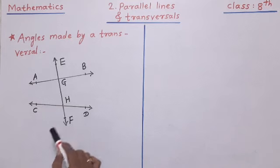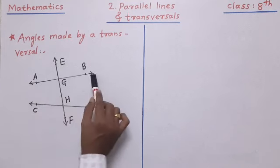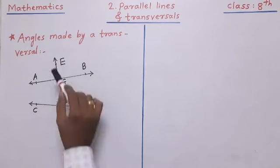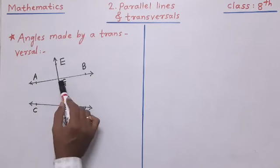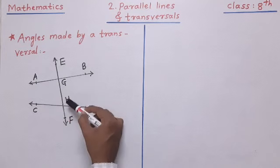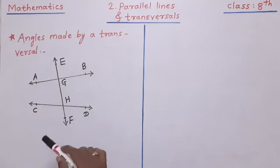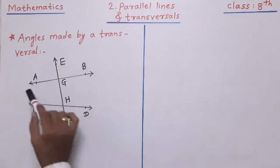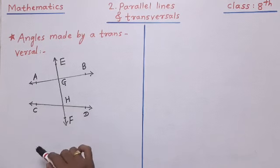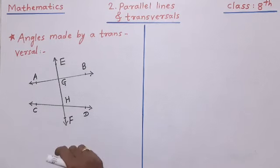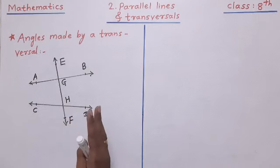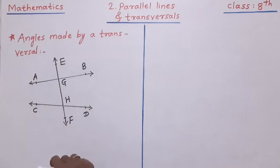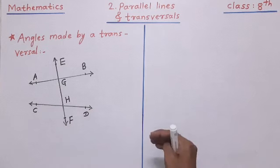So EF is the transversal of line AB and line CD, which intersects these two lines in two distinct points, G and H. Now dear students, you have to understand here: when a transversal intersects two lines, then three types of angles are formed. Those three types are corresponding angles, interior angles, and alternate angles. We are going to see these angles one by one.